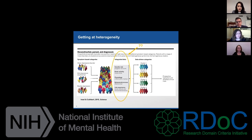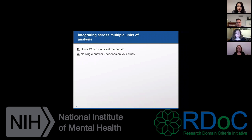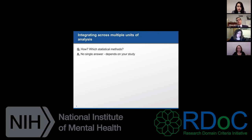One question we often get is: how exactly do you integrate data from multiple methodologies? What statistical method do you use? The answer is that there is no single method we would advocate — it all depends on your study and the question you ask, as long as you follow the principles of RDoC. What we'd like to show in the next hour is why there is no single statistical method that can address all problems and how to go about doing your study.